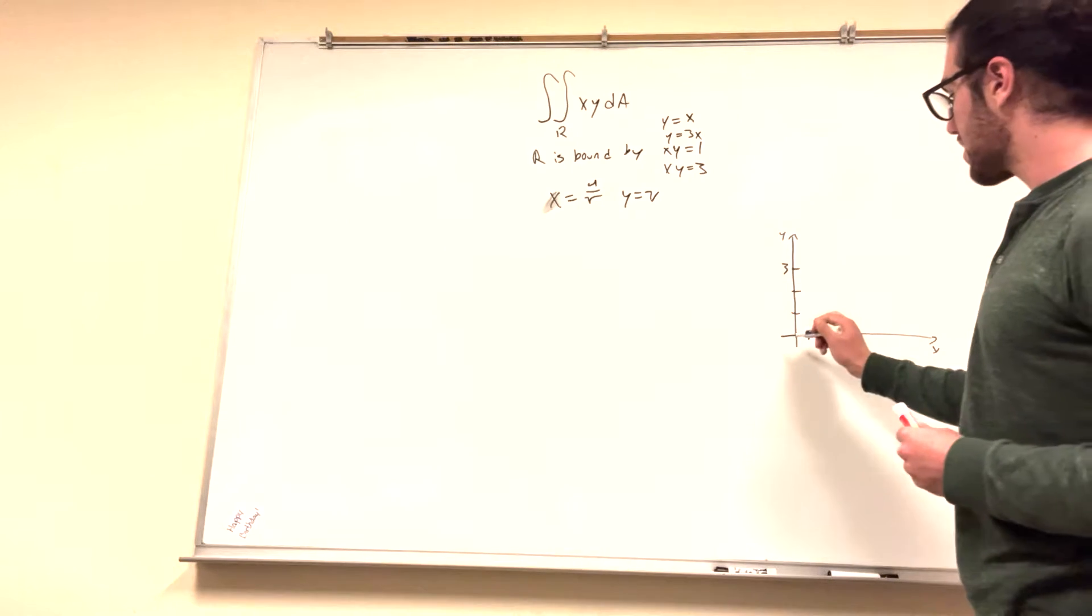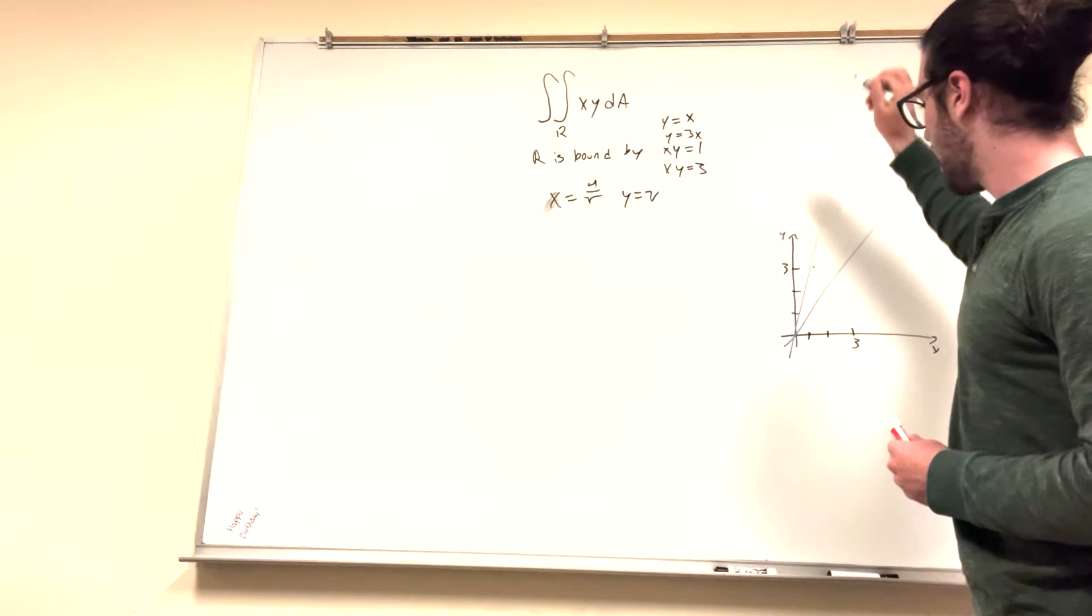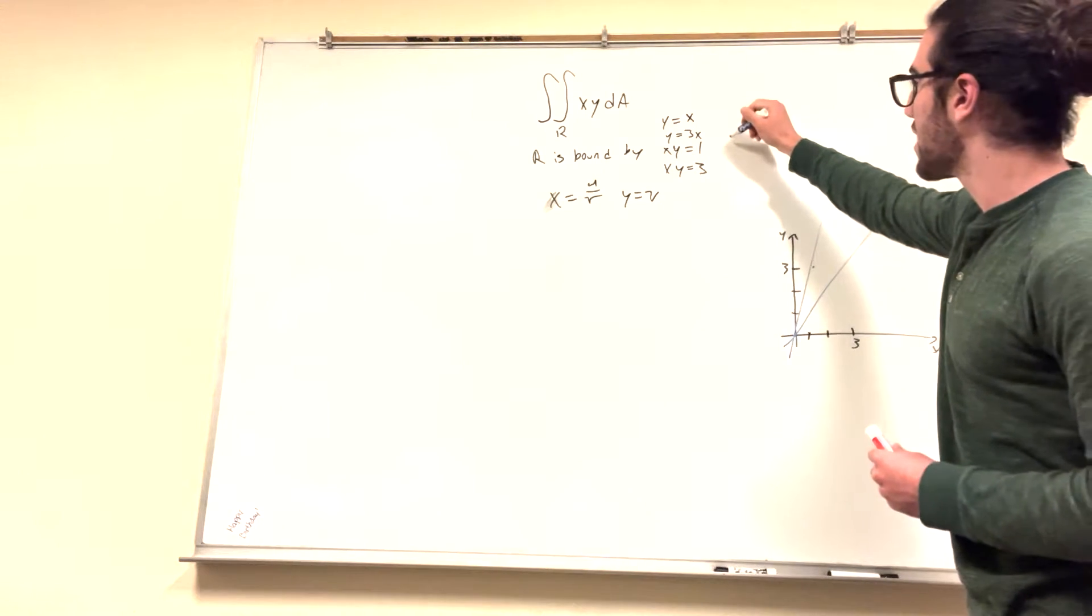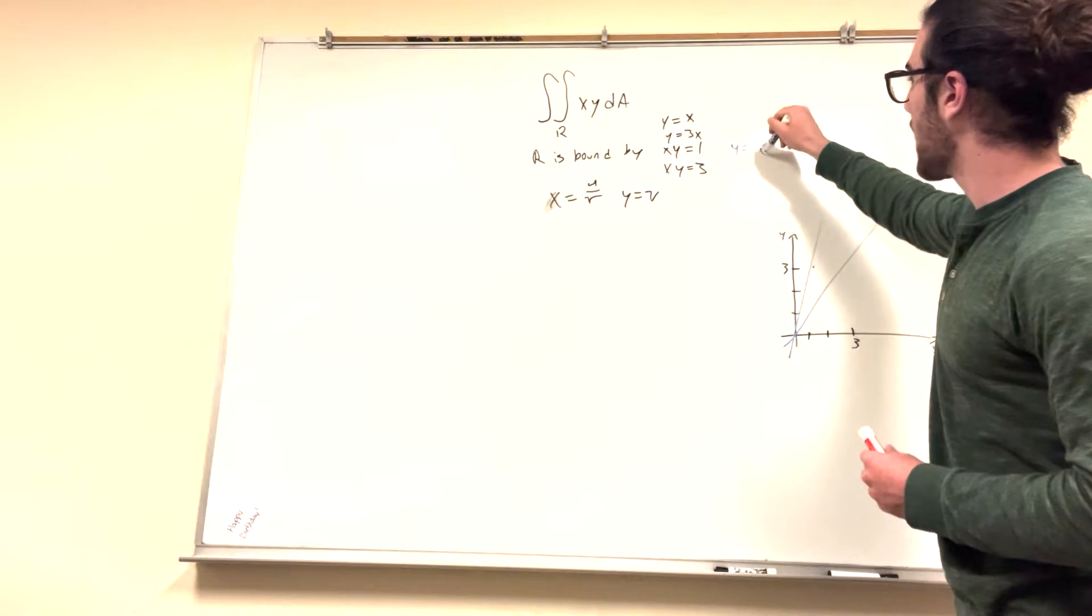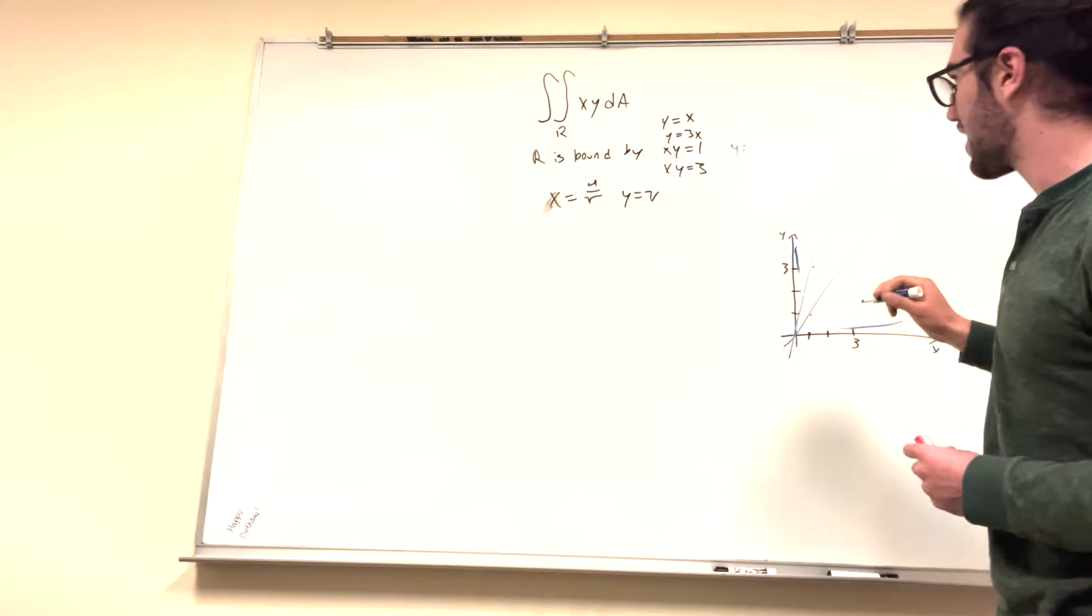So we have y equals x, looks just like that. y equals 3x is going to look just like that. xy equals 1, you can actually rewrite this as y equals 1 over x. And we know what this looks like. It has a point at 1, 1, and it kind of just slopes around like that.